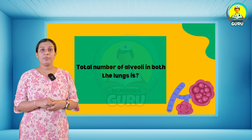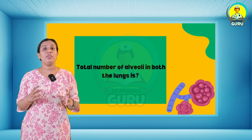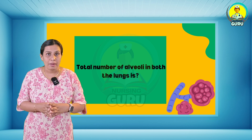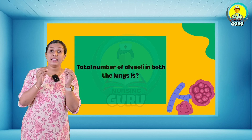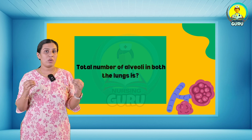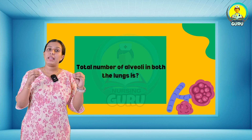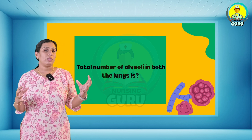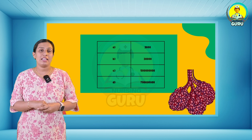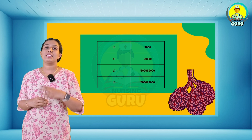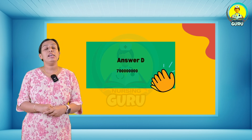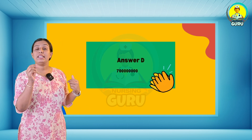Third question: the total number of alveoli in both lungs is how many? The alveoli are where the lungs and the blood exchange oxygen and carbon dioxide during breathing in and breathing out. You have four options — take 50 seconds to find the right answer. The right answer is option D.